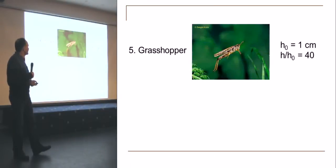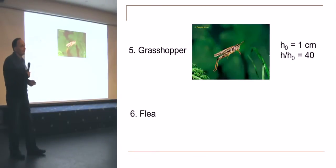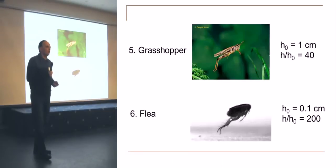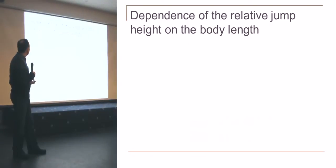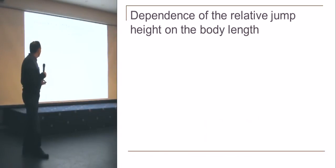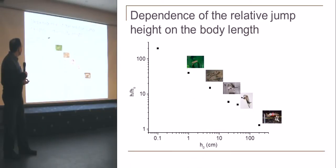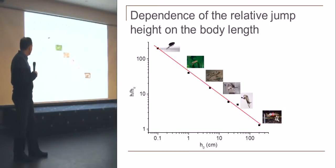A grasshopper, being 1 centimeter tall, jumps 40 times higher than its length. And finally, a flea. A flea is very small. It has a length of only 1 millimeter, and it jumps 200 times higher than its length. Let us plot this dependence of the relative jump height on the body length. We have come up with this picture in the log-log scale. Here is a man, here is a cat, a rat, a frog, a grasshopper, a flea. All of them in the log-log scale lie on the very same straight line.